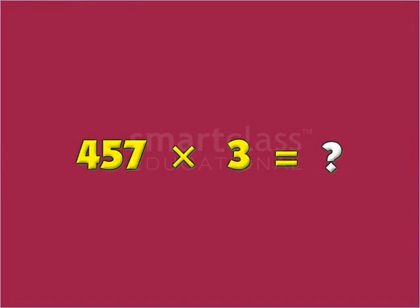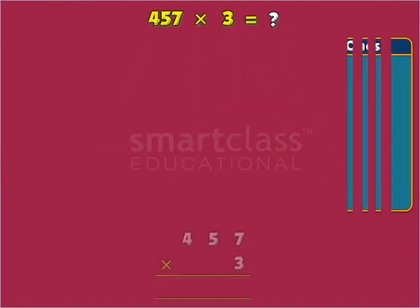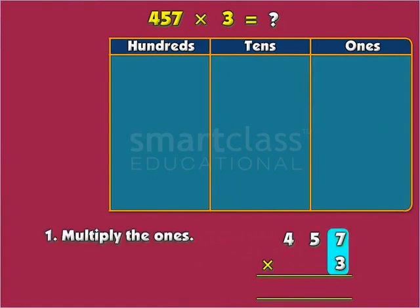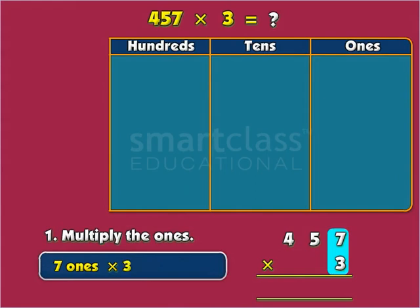Let's use the blocks to find the product. Step 1. Multiply the ones. So, 3 times 7 ones equals 21 ones.